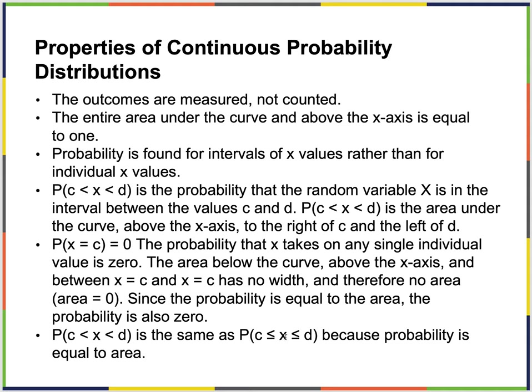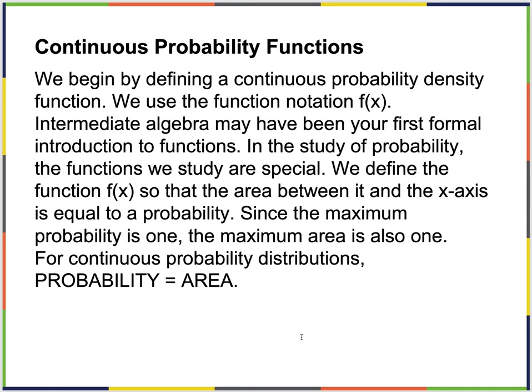The probability of c < x < d, where c and d are actual numbers, is the same as c ≤ x ≤ d. The probability is the same. So we define a continuous probability density function.